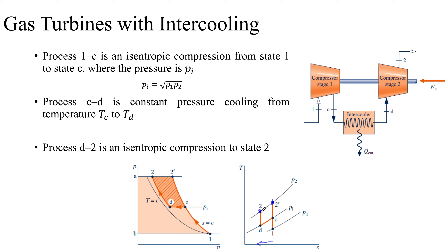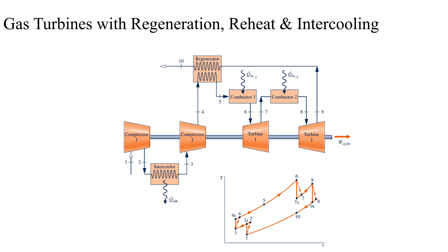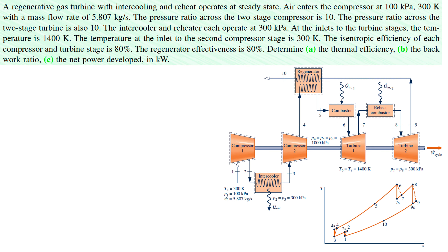For larger systems with several compression stages, there would be more than two compressor stages with intercooling. Using intercooling and reheating together with regeneration, one possible arrangement has two compressor stages with intercooling, two turbine stages with reheating in combustion chamber two, and a regenerator. The corresponding TS diagram is shown. This problem is left for you to try yourself to practice these kinds of questions.